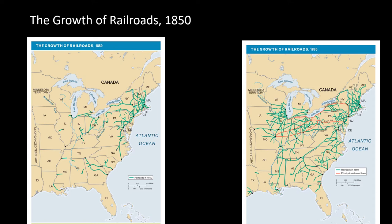Such increases in infrastructure required substantial amounts of money, filled by private investors, state governments, and later by the federal government — primarily through the purchase of stock in various companies. Importantly, railroads were not the same gauge, meaning a train could not travel from New York all the way to Chicago unless it was on one line. By 1850 railroads had exploded in the northeast and the midwest, giving the north a significant advantage in industrialization, while railroads in the south remained very meager.